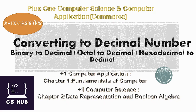Hello everyone, welcome to Computer Science. Today's topic is converting number systems to decimal. We currently have plus one and plus two classes. Plus one Computer Application covers Fundamentals of Computer in chapter one, plus one Computer Science chapter two is Data Representation and Boolean Algebra, covering number systems and types of number systems. We will start number conversion.